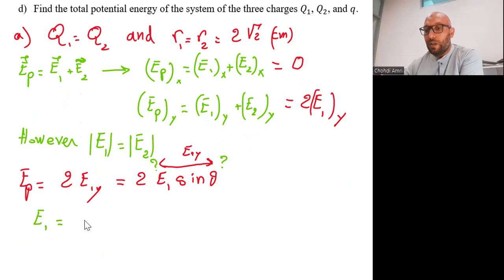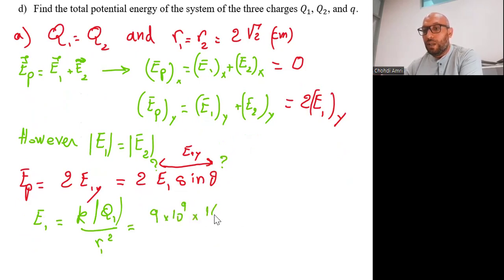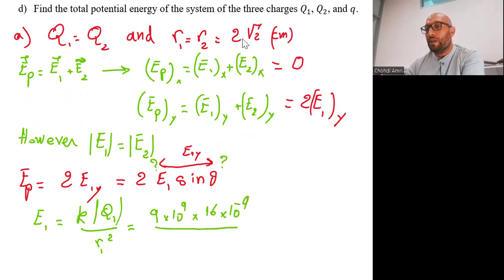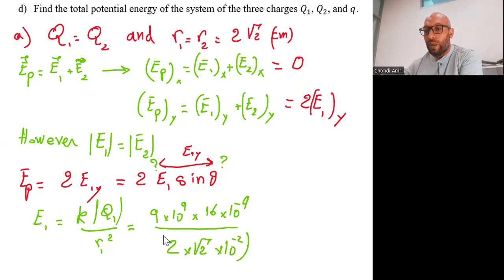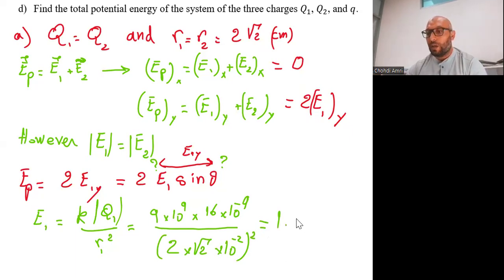The magnitude of E1 is given by E1 = k|Q1|/R1². Substituting: k = 9×10⁹, Q1 = 16×10⁻⁹ C, and R1 = 2√2 × 10⁻² m, so R1² = (2√2 × 10⁻²)². The result is E1 = 1.8×10⁵ N/C.